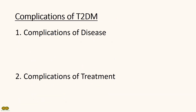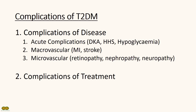Complications of type 2 diabetes can be classified into complications of the disease itself and complications of the drug treatments. Acute complications include diabetic ketoacidosis, hyperosmolar hyperglycemic state, and hypoglycemia. We should see diabetes as a vascular disease. Chronic complications can be classified into macrovascular such as stroke and MI, and microvascular such as retinopathy, nephropathy, and neuropathy.